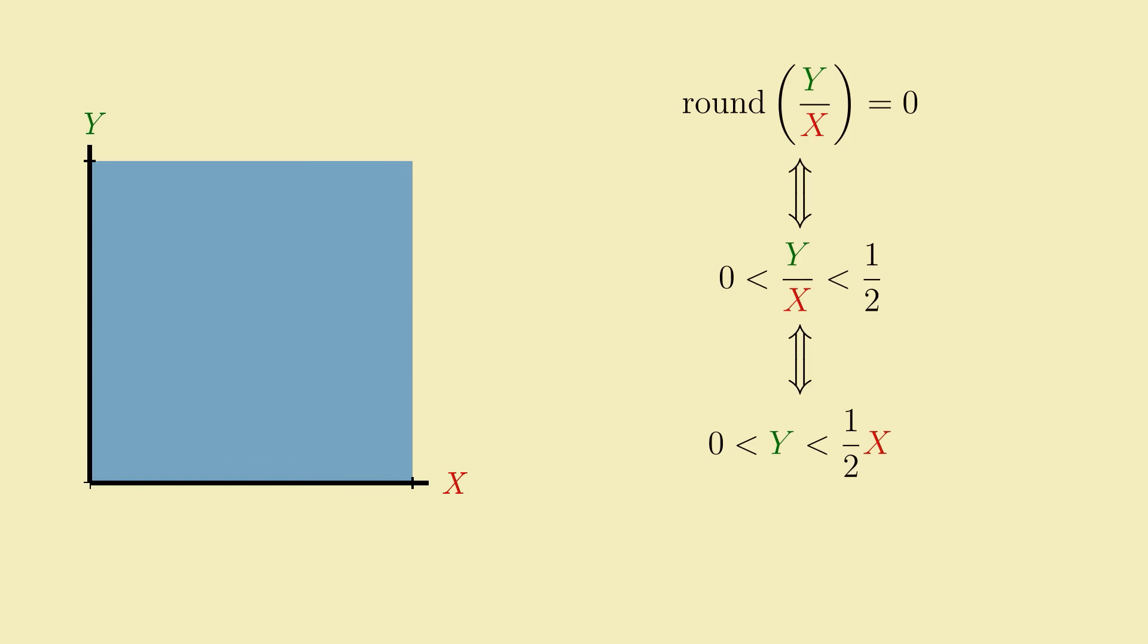Multiplying all sides of this inequality by x tells us that y must be between 0 and 1 half x. On the graph, this corresponds to the triangular region of the unit square underneath the line y equals 1 half x. Since this triangle has area 1 fourth, and the entire unit square has area 1, the probability that the ratio y over x rounds to 0 is exactly 1 fourth.